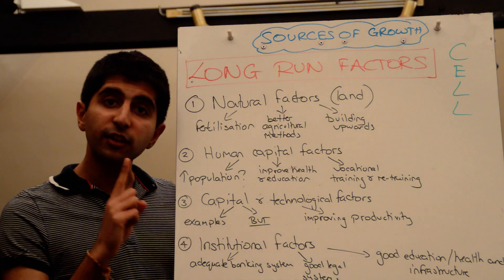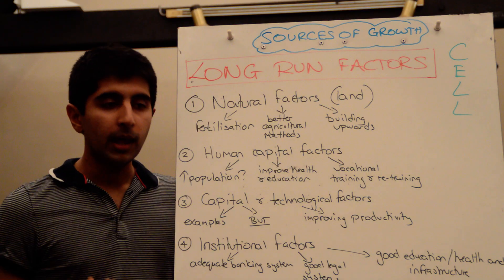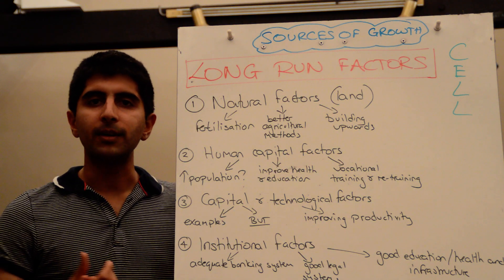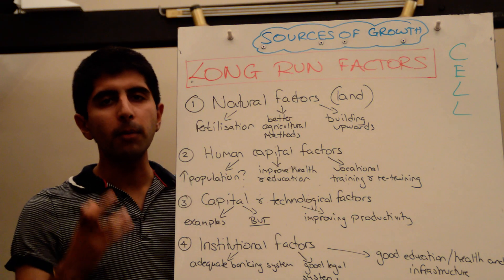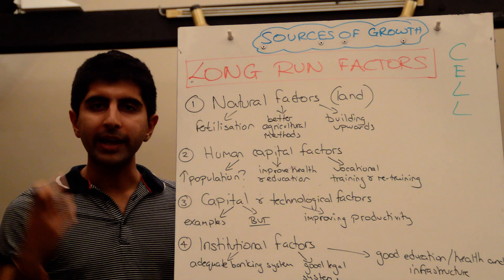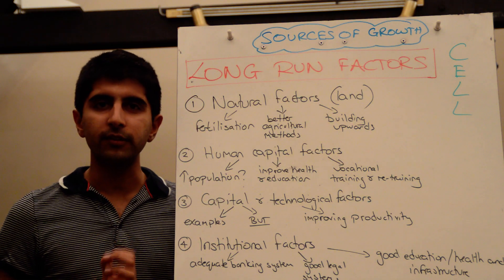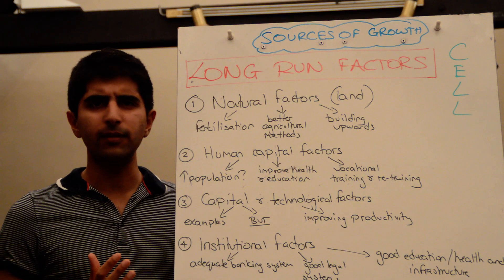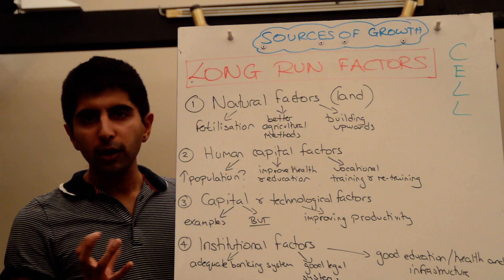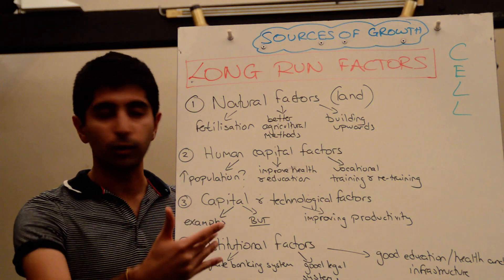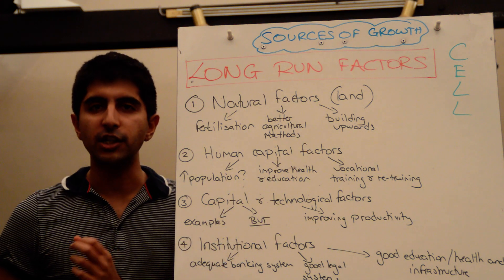One way to increase labour is to increase the quantity by growing your population — maybe through immigration, maybe through restricting birth controls. But we already know that one major constraint to economic development is high birth rates in developing countries, so do you really want to increase your population even more? Risky, unlikely. So developing countries should really focus on the quality of their labour for long-run potential growth. How can they do that? Well, improve health and education in those economies.